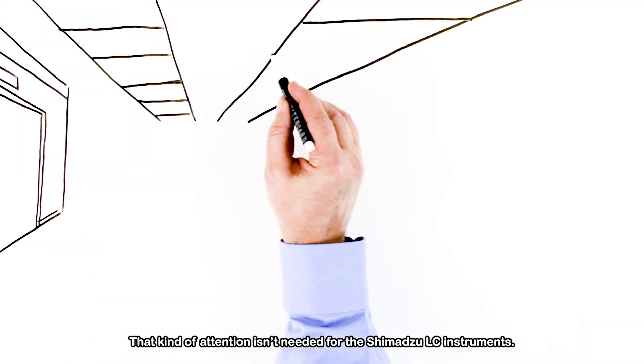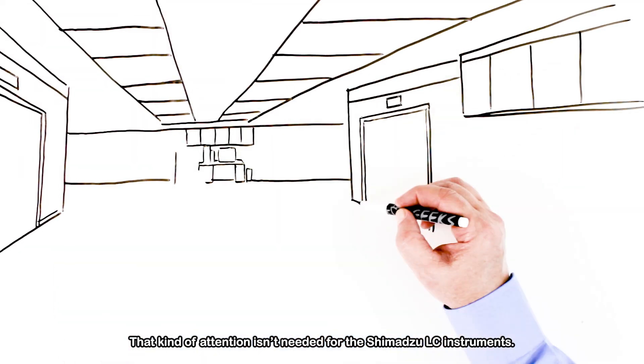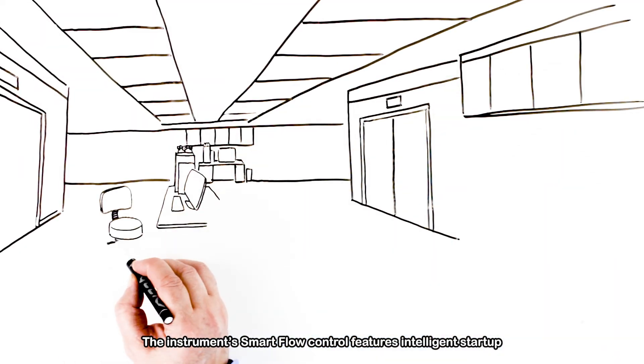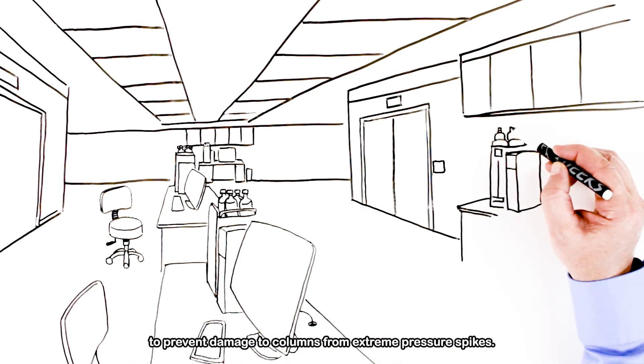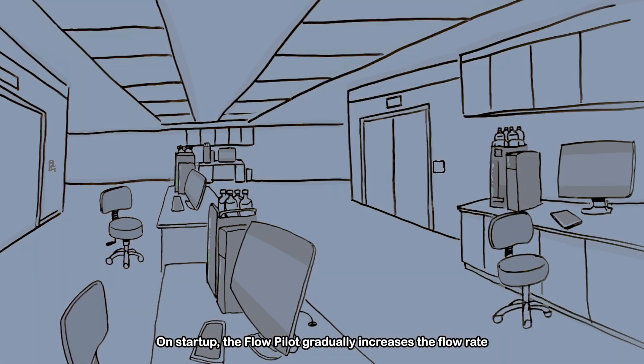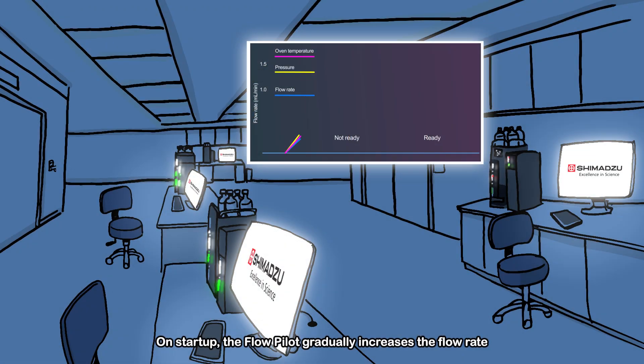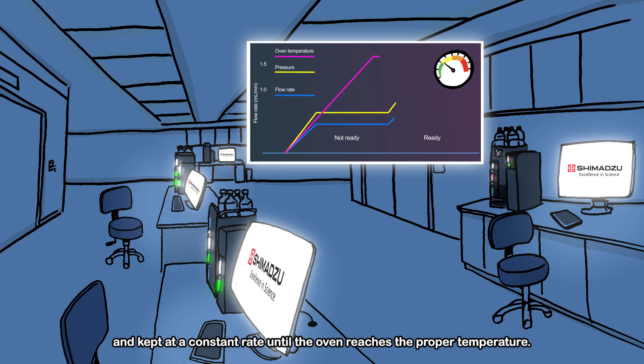That kind of attention isn't needed for the Shimadzu LC instruments. The instrument's smart flow control features intelligent startup to prevent damage to columns from extreme pressure spikes. On startup, the flow pilot gradually increases the flow rate to 50% of the predetermined value and keeps it at a constant rate until the oven reaches the proper temperature. Only then is the flow rate increased to the desired final value.